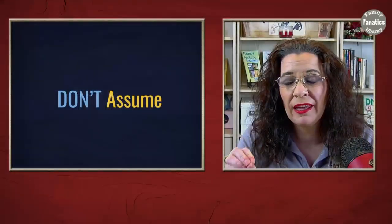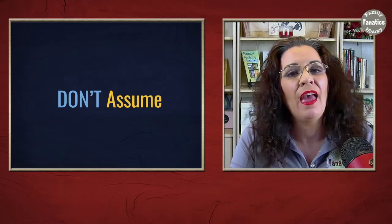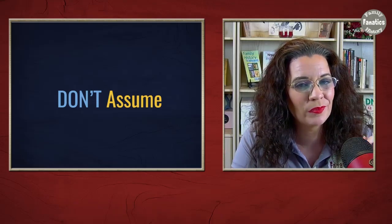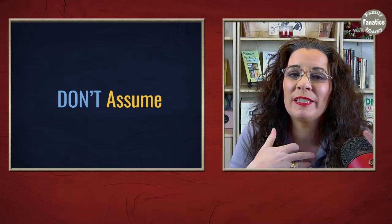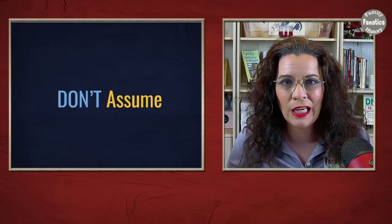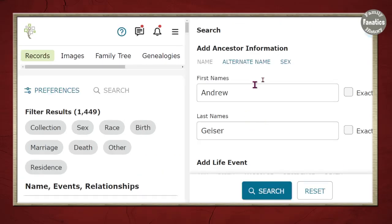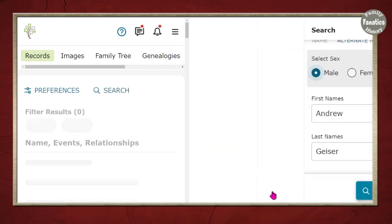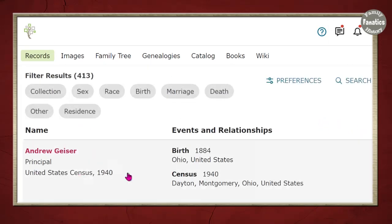Don't assume anything when you're doing census record research. I was presented with a name and asked to search for it — and it turns out the surname was wrong. Slightly wrong. It wasn't similar to Geissler or some derivative; it turned out to be something different. I filtered by sex and searched for every Andrew Geissler with that variation, but that didn't work. I'm trying to find the 1930 census, moving backward in time, and I'm not seeing it.